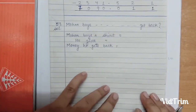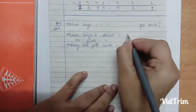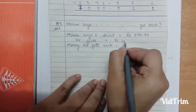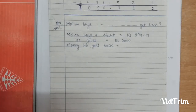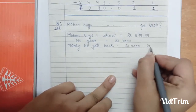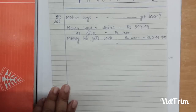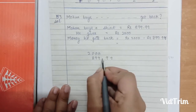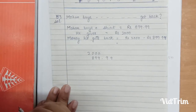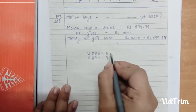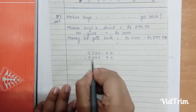So first we write the statement. Mohan buys a shirt for rupees 899.99 and he gives rupees 2000. For finding the money he gets back, we do the subtraction: 2000 minus 899.99. Now you can see this is not a like decimal, so on the empty places we put zeros to make them like decimals. Under 2000 we write the decimal point and zeros on the tenths and hundredths places. Now we do the subtraction.